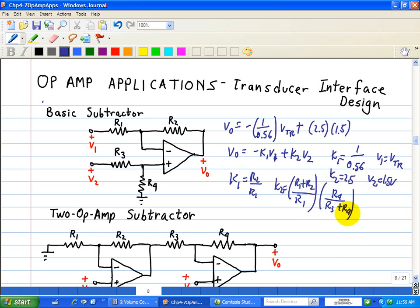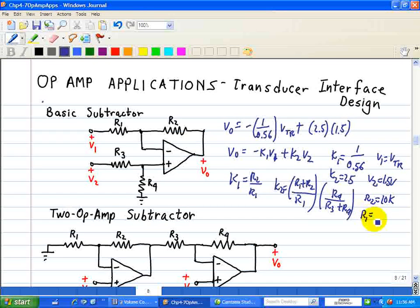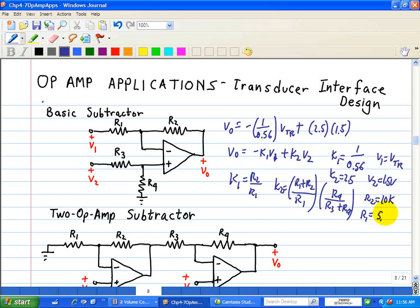So this gain of K1 of 1 over negative 0.56 can be realized choosing that R2 equals 10k and R1 is equal to 5.6k. So that serves that value.